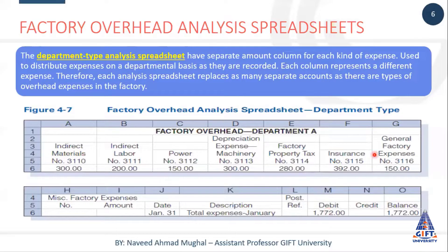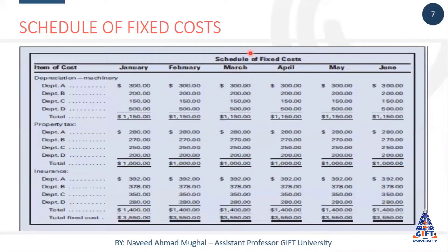Is tariqe se hum log unki entries jo hain woh different departments ko charge kar dete hain. Toh yeh hum log ne other expenses ke andar entry ki hai journal ke andar aur ledger account ke andar. Phir hamare kuch expenses woh aate hain jo ke mahine ke ya poore saal ke fixed hote hain. Aur jo agar woh annual aate hain jaise depreciation annual aati hai, toh hum log us ko monthly calculate kar sakti hai aur ham log unko monthly banate jaate hain, aur ek ek month ka column add karte jaate hain.